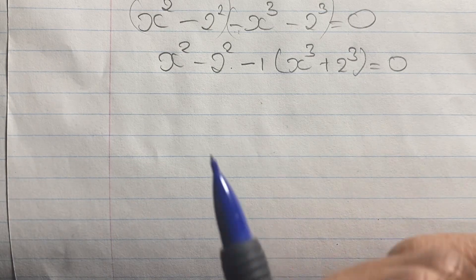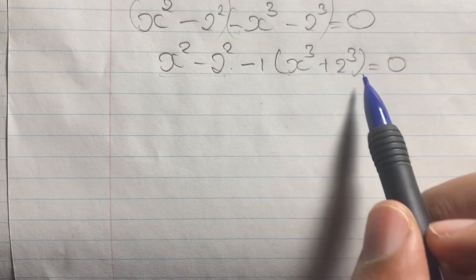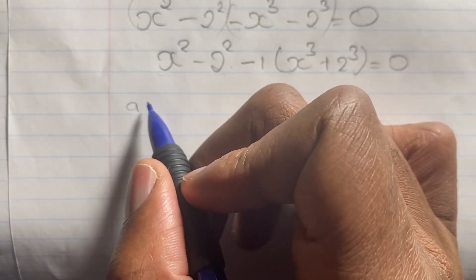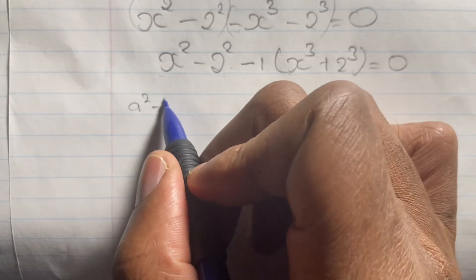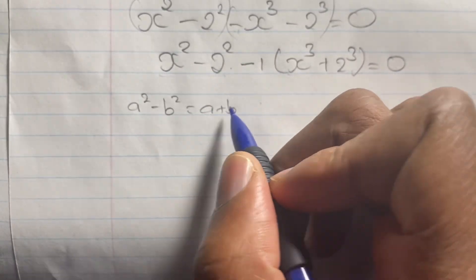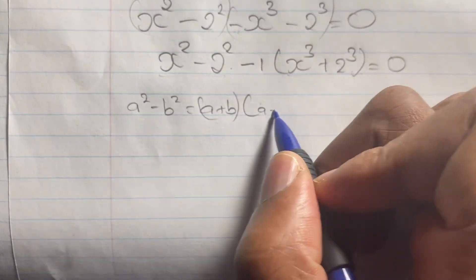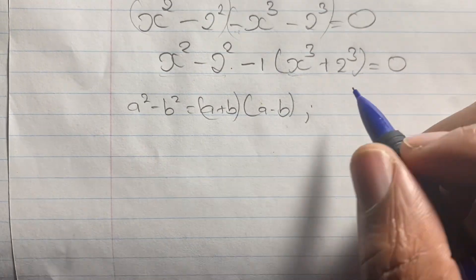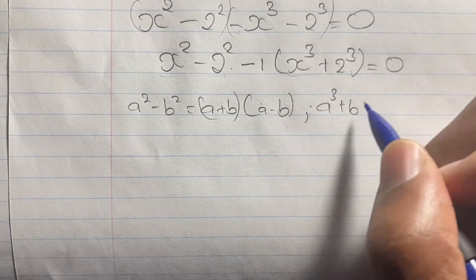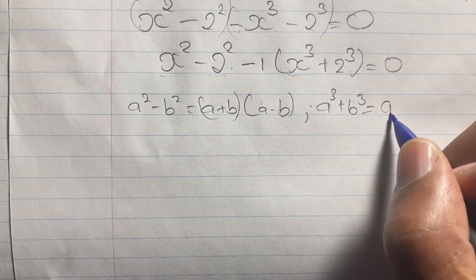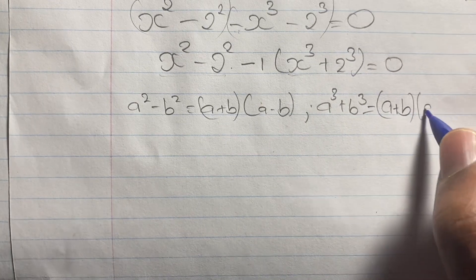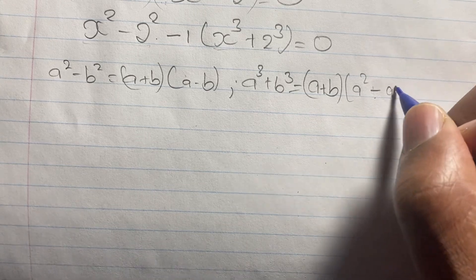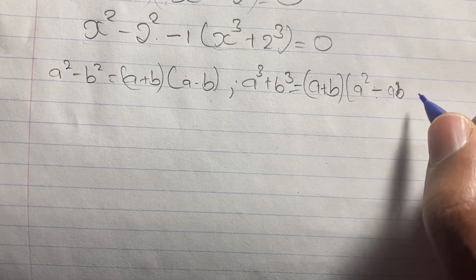Pay attention here as we recall algebraic identities. We have the difference of two squares and the sum of two cubes. The difference of two squares: a squared minus b squared equals (a plus b)(a minus b). The sum of two cubes: a cubed plus b cubed equals (a plus b)(a squared minus ab plus b squared).